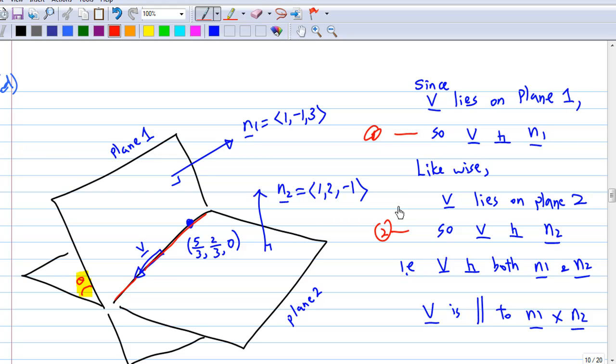So how do we find a vector perpendicular to both n1 and n2? One simple construction is n1 cross n2. So that is why we conclude that the vector v is parallel to n1 cross n2.